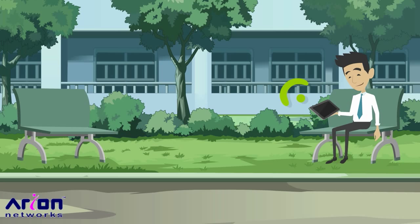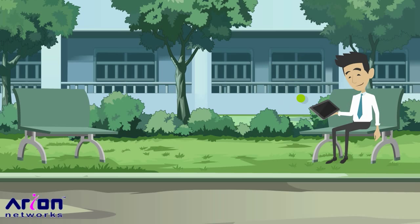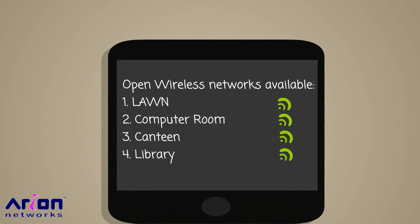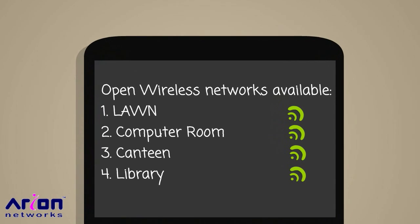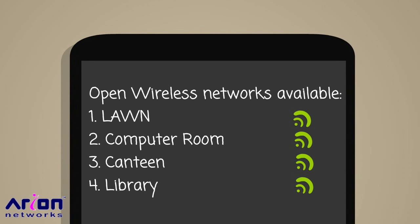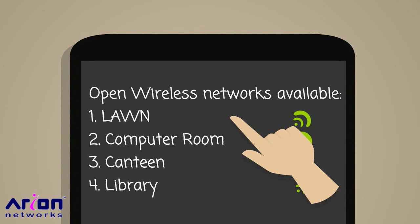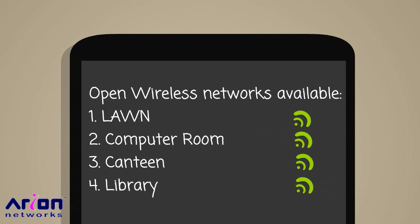Rowan is sitting on the lawn during recess time and wants to check his emails. He searches for available Wi-Fi networks on campus and finds four available networks. He decides to connect to the network with the SSID 'lawn'.